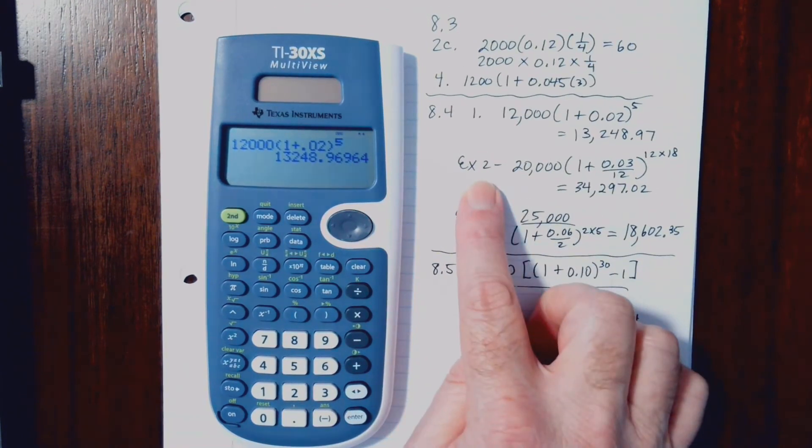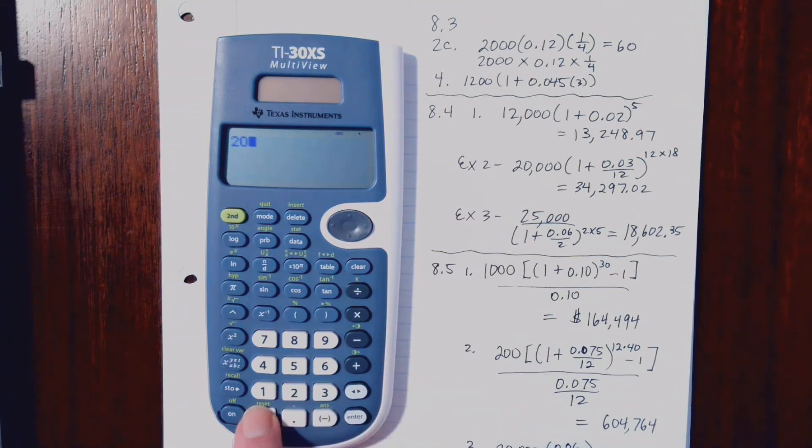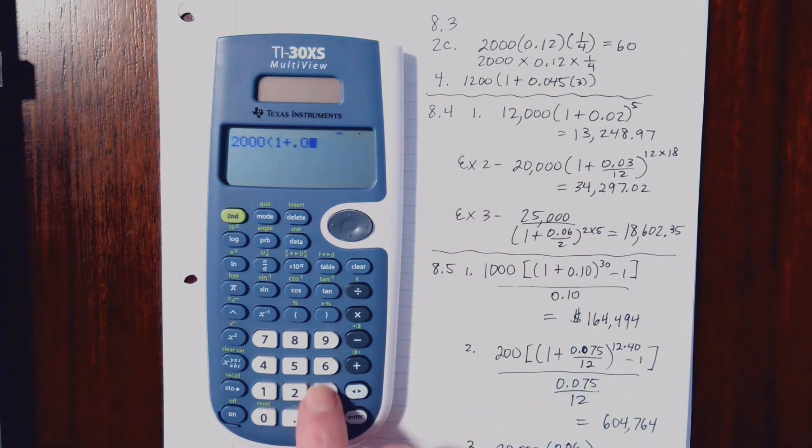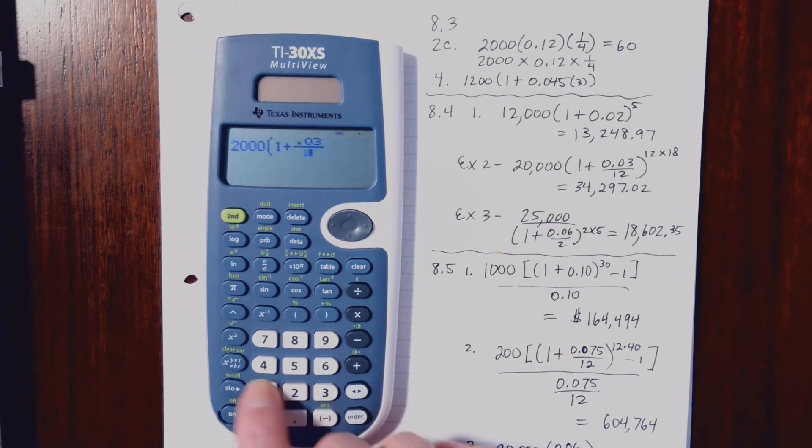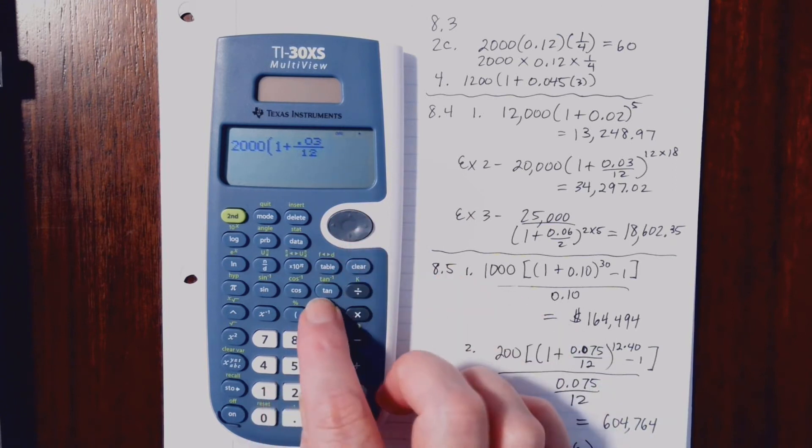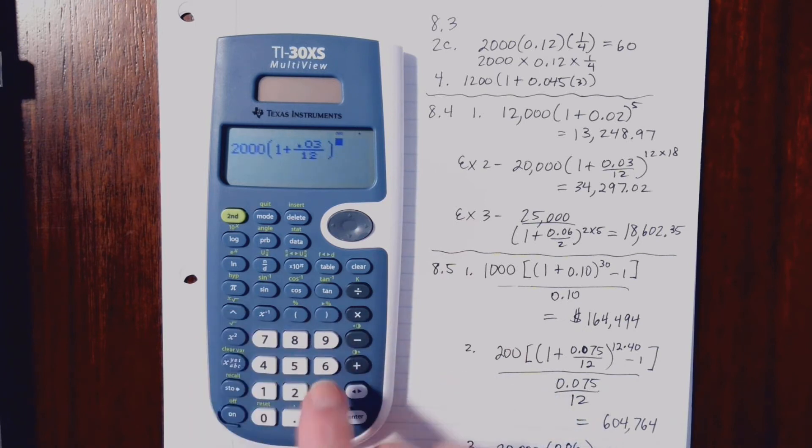All right, let's move on to Example 2 from Section 8.4. So 20,000, parentheses, 1, plus .045. Now, this is a fraction. We can just hit .03 and then hit the fraction symbol. And then we'll have 12 in the denominator. And then parentheses, and then exponent, 12 times 18.